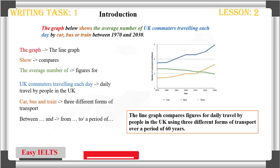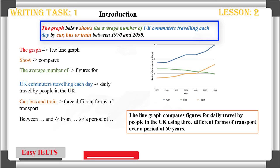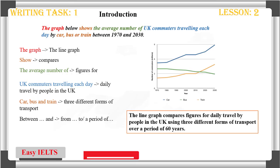Let's start with our new example. Today's example talks about the average numbers of UK commuters travelling each day by car, bus or train. The time frame it covers is from 1970 to 2030, so it does make predictions about the future. For those of you who have never heard the word commuter — a commuter is somebody who travels into the city for work and out of the city to get home.